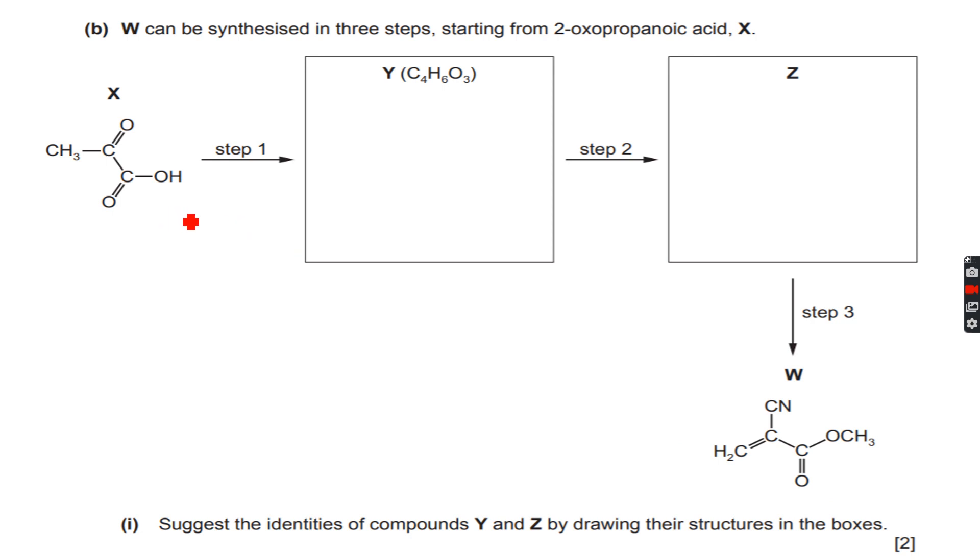What we will do is we anyway have to react it with an alcohol because we have to get the ester group. This is a carboxylic acid group and this is an ester group, so we anyway have to react it with an alcohol to make the ester. We will be reacting with methanol because this is a CH3O group, so CH3O means that the original alcohol used was methanol.